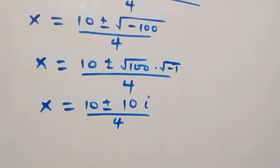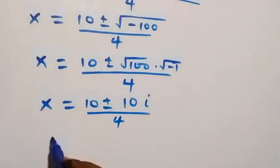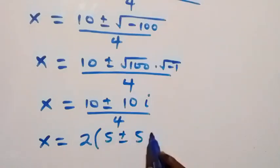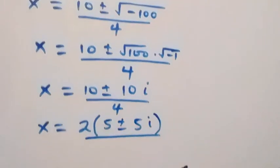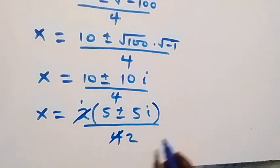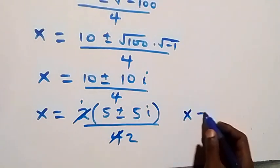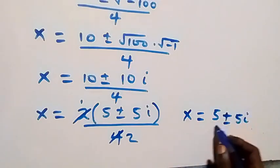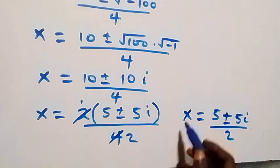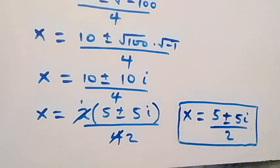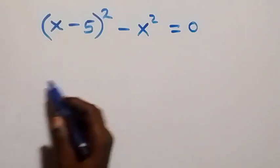Factoring what is common, we have x equals 2 times bracket 5 plus or minus 5i, over 4, and the 2 cancels, so x equals 5 plus or minus 5i, over 2. This gives us two complex solutions.